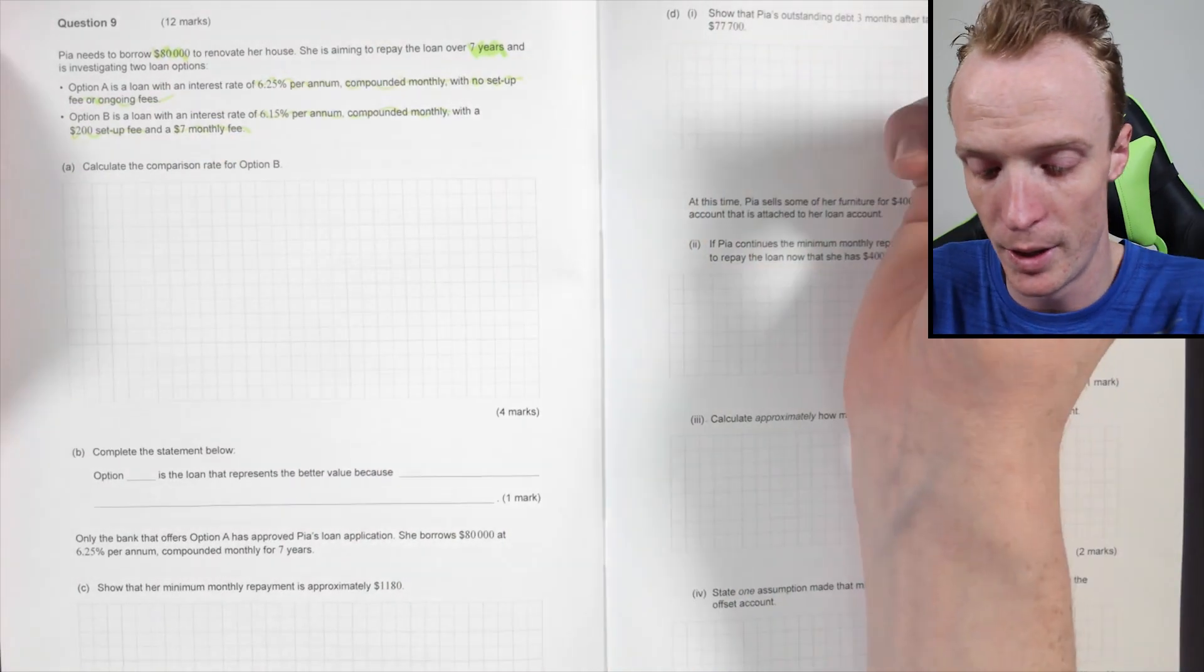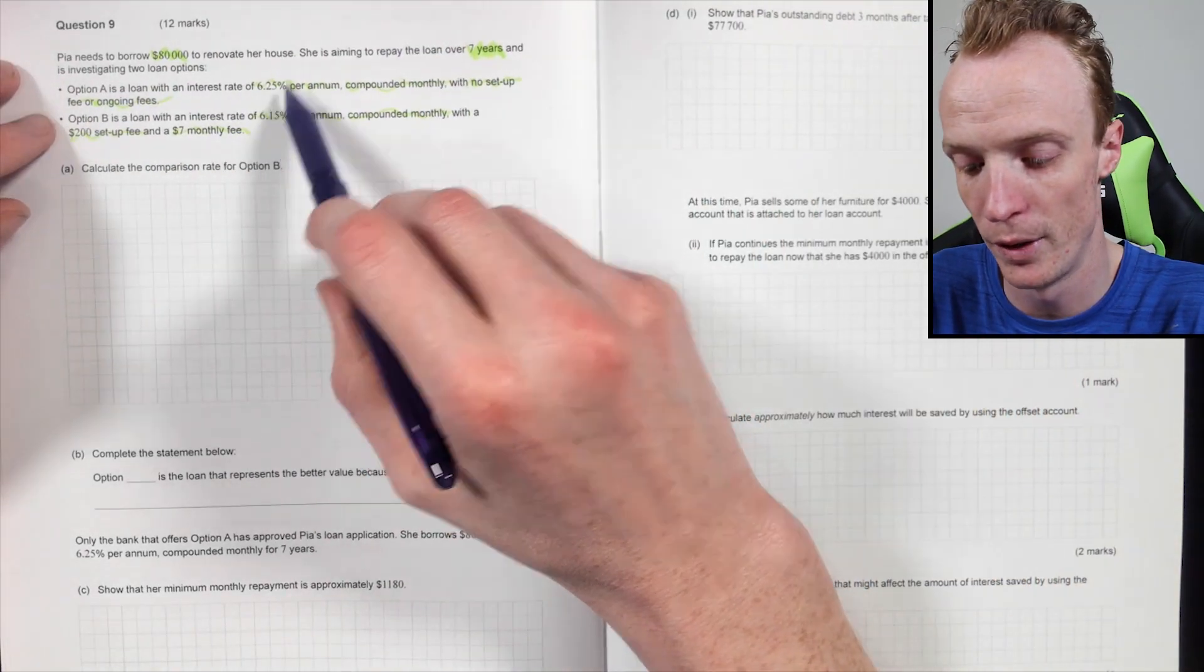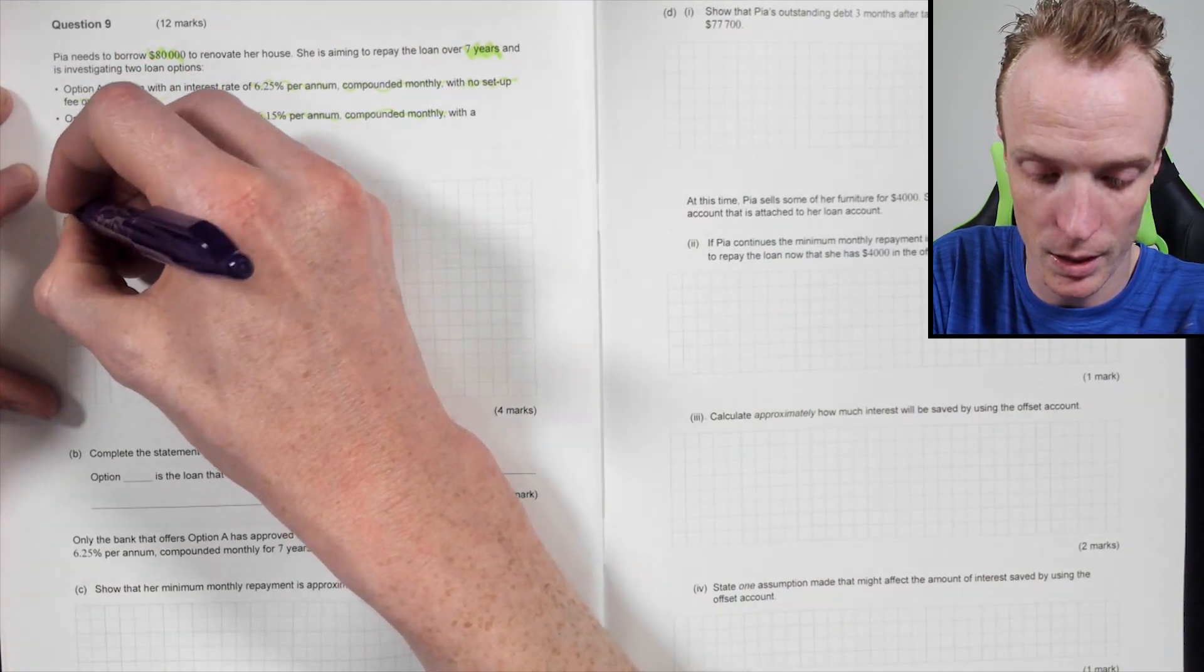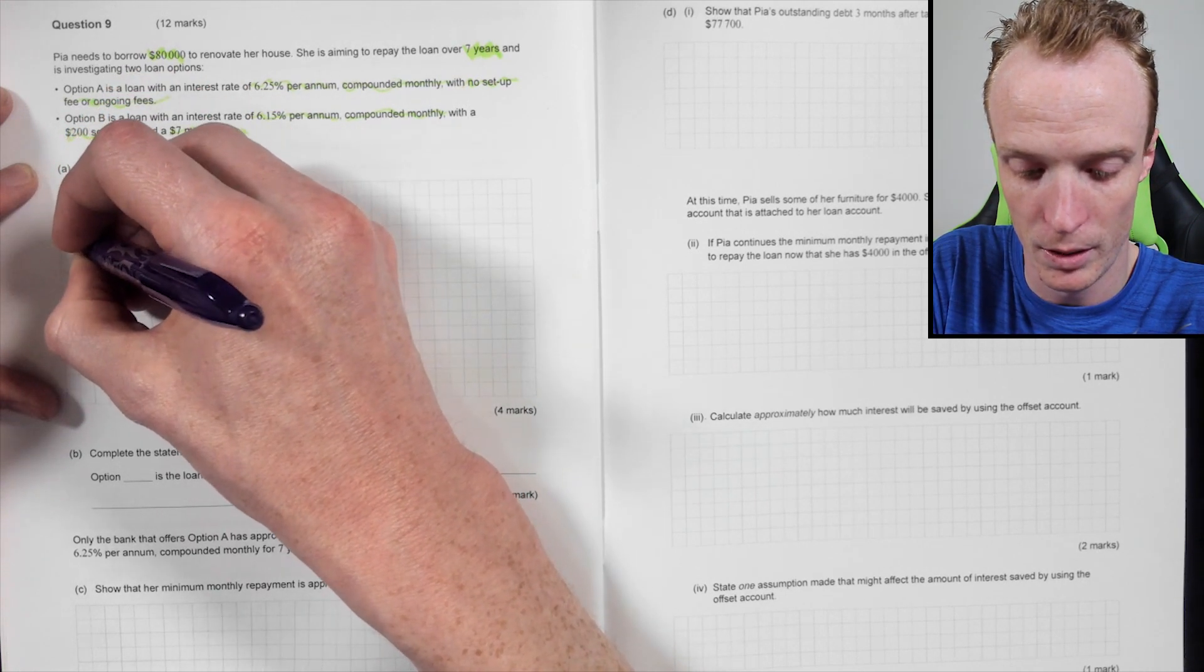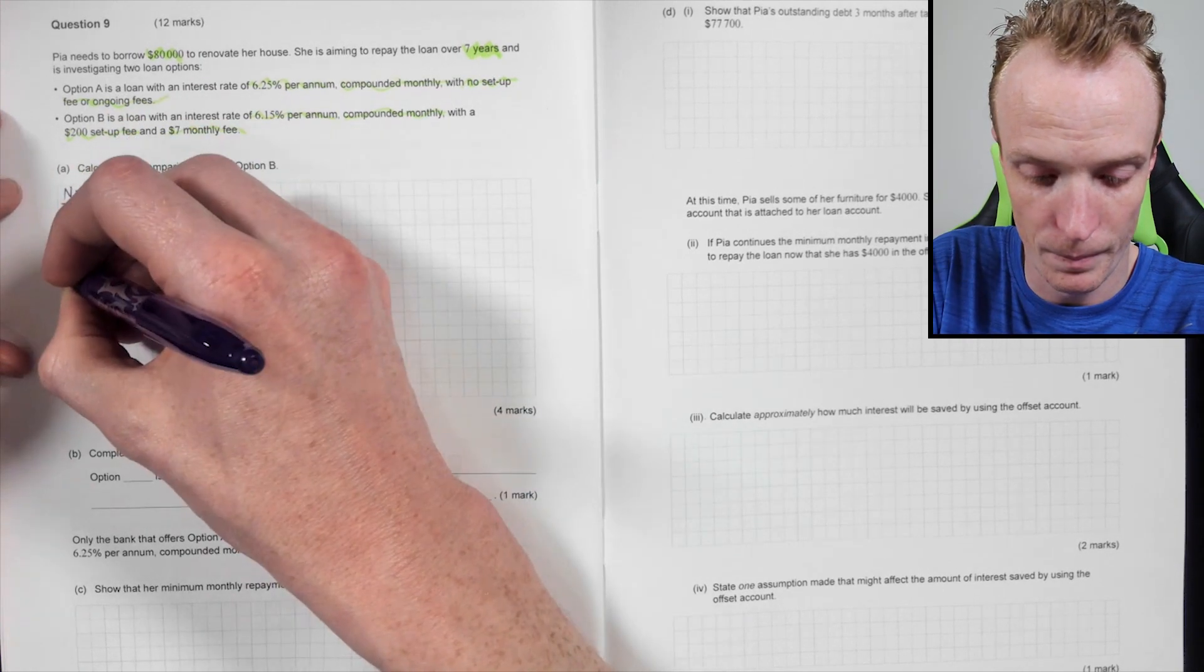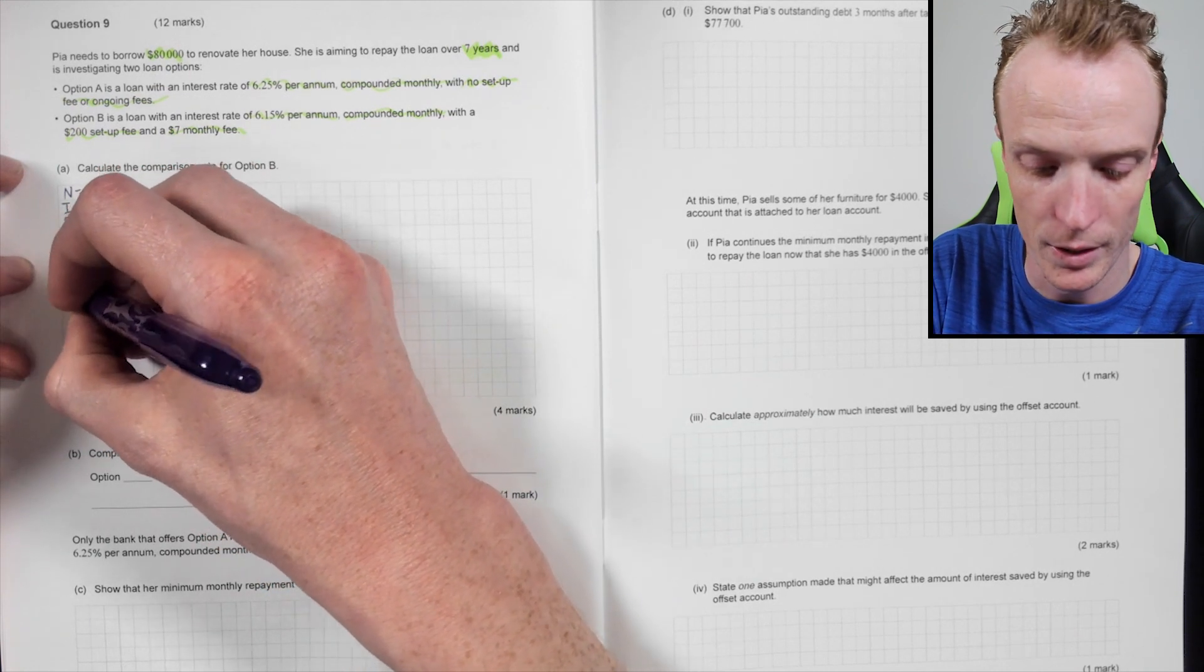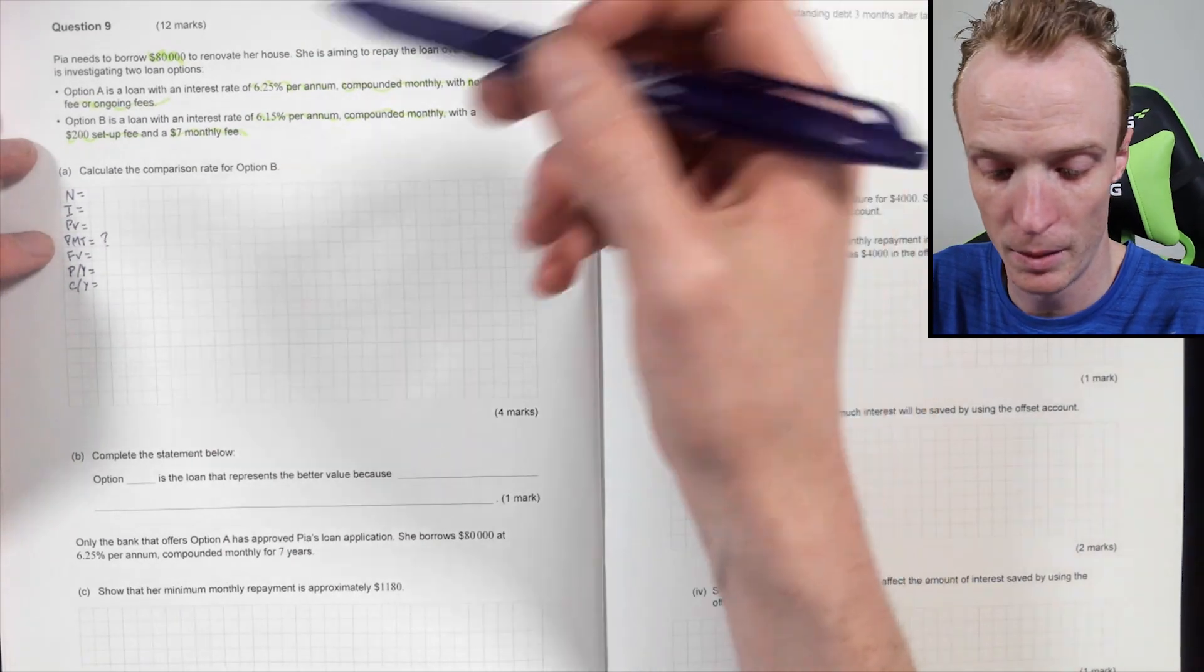Okay, so this is a step-by-step thing. It doesn't want A. Well, A's comparison rate is just 6.25% anyway, because there's no fees. But the first thing that we need to do is this N, I, PV, PMT, FV, PY, and CY. First thing that we need to do is do a PMT comparison, get a PMT.